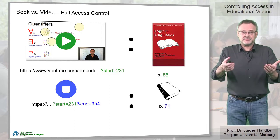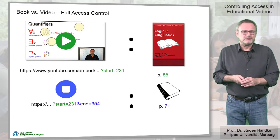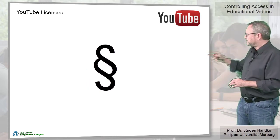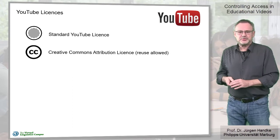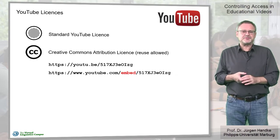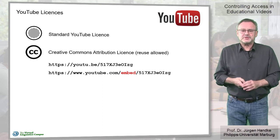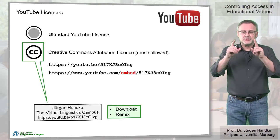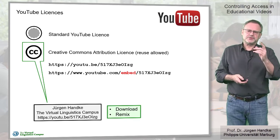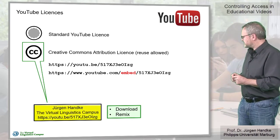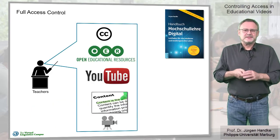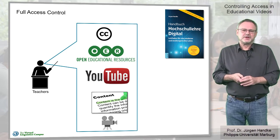Just another mode of academic content control. By the way, there are two YouTube video licenses: the standard YouTube license and the Creative Commons license. Both allow sharing and embedding unless otherwise specified by the channel owner. Videos with the Creative Commons license can even be downloaded and remixed, allowing even more control. The only condition is that the original author has to be mentioned.